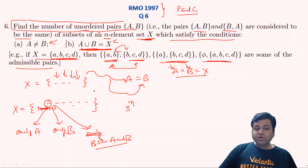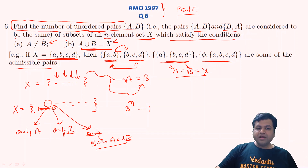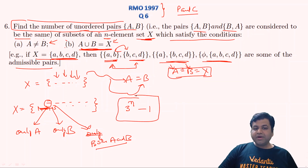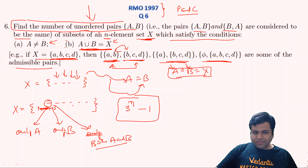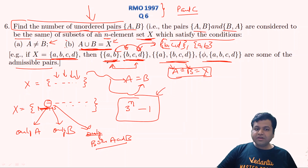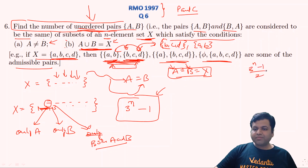But A can equal X in one of those cases, so we subtract that one case when both A and B equal X. Since we have excluded A = B, we are left with (3^N − 1) ordered pairs. However, each unordered pair is counted twice in this total — once as {A, B} and once as {B, A} — but we are interested only in unordered pairs, so the total number of solutions is simply (3^N − 1)/2.